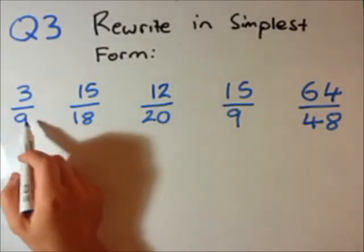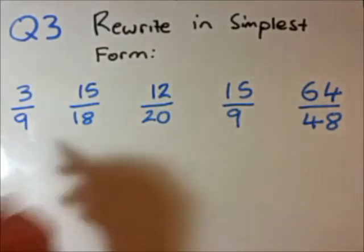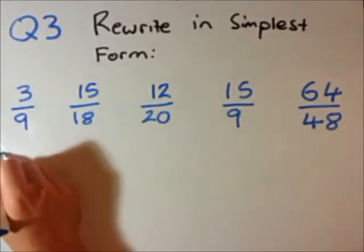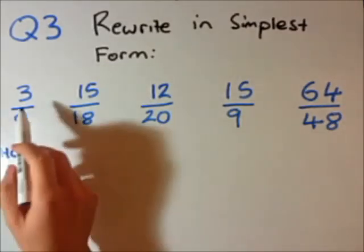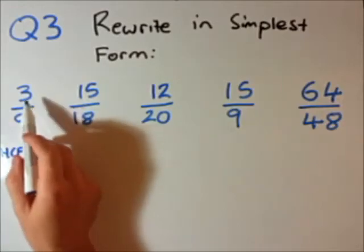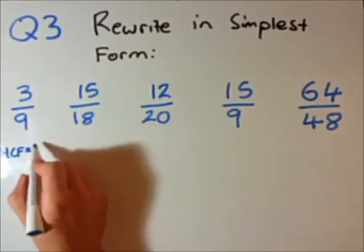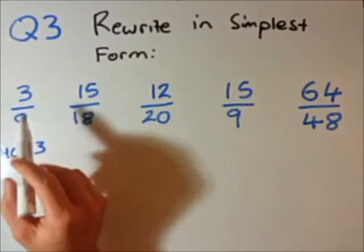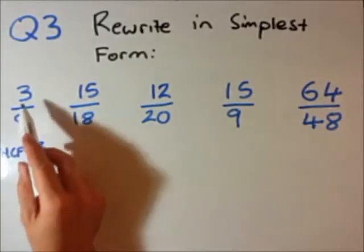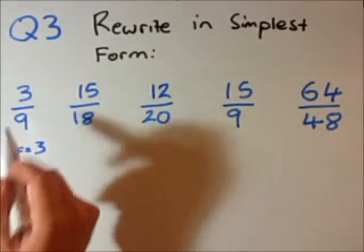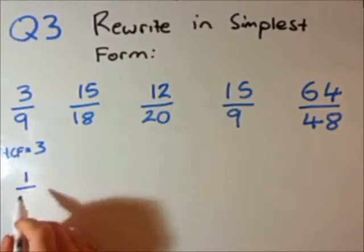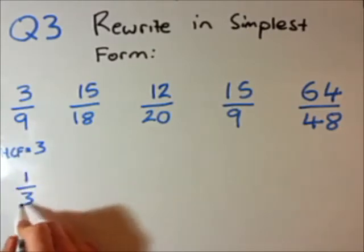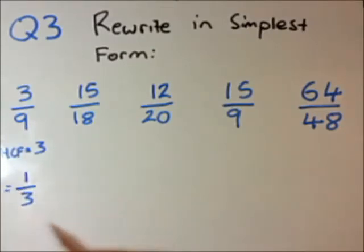Let's start with an easy one: 3 over 9. What is the highest common factor? The highest common factor of 3 and 9 is 3, because 3 goes into 3 and 3 goes into 9. Now you divide the top and the bottom by 3. 3 divided by 3 is 1. 9 divided by 3 is 3. So this is now in its simplest form.